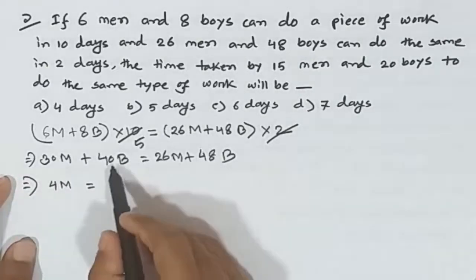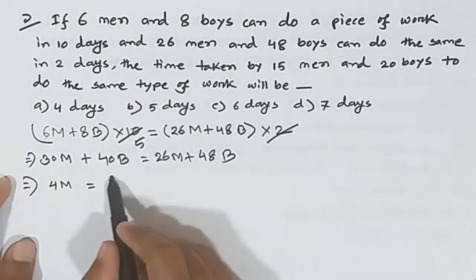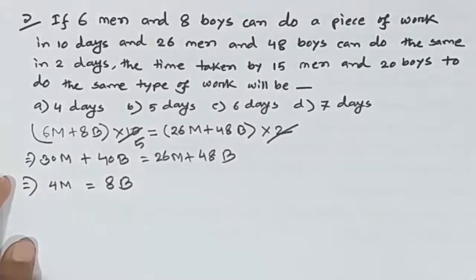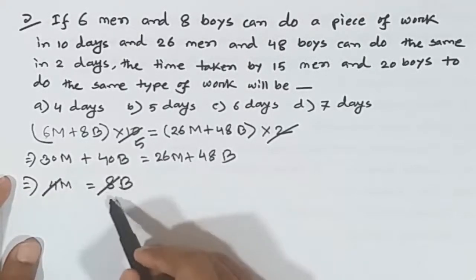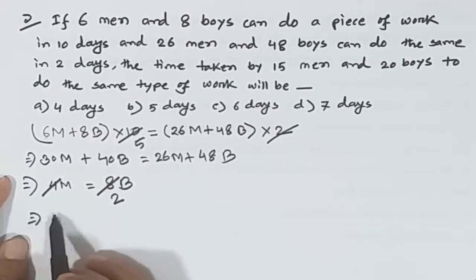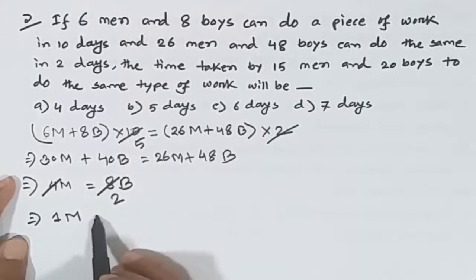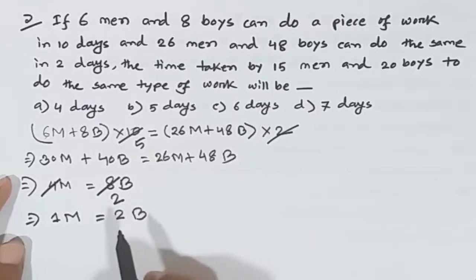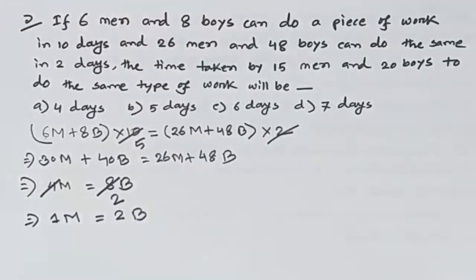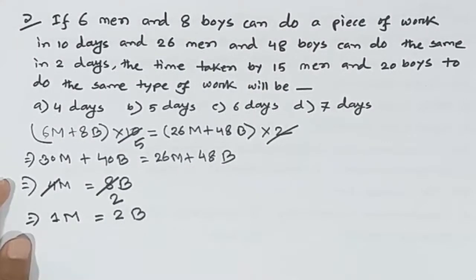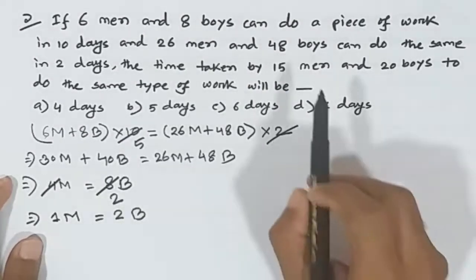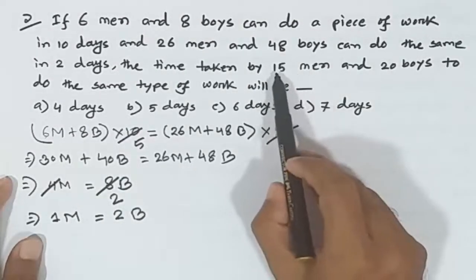So we have 4 boys and we will divide: 4, 2, 8. So we will divide the 2 boys, and we will divide the 2 boys again.